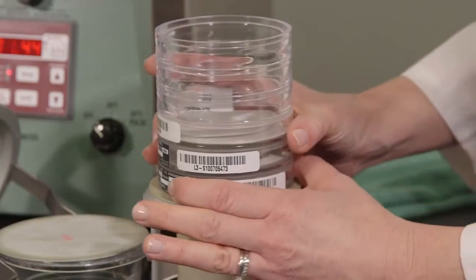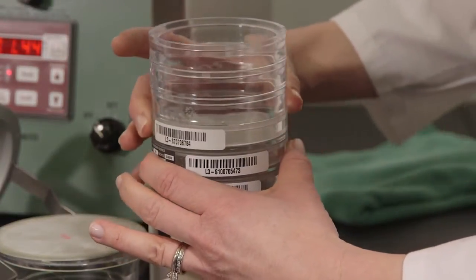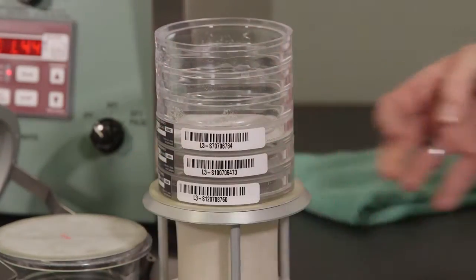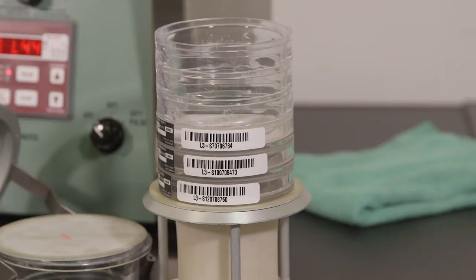For ease of sample viewing, align the sieves so the labels are all on one side. There is room for up to 6 standard series sieves, or 3 electroformed.